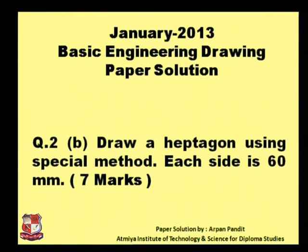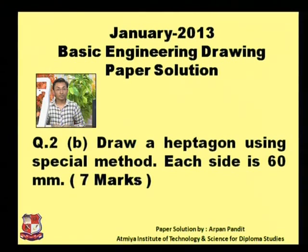Now our next problem is draw a heptagon using special method. Each side is of 60 mm. What is heptagon? Heptagon is a polygon of 7 sides. We are going to draw this heptagon using special method. Each side is of 60 mm. I will show you how to draw this.